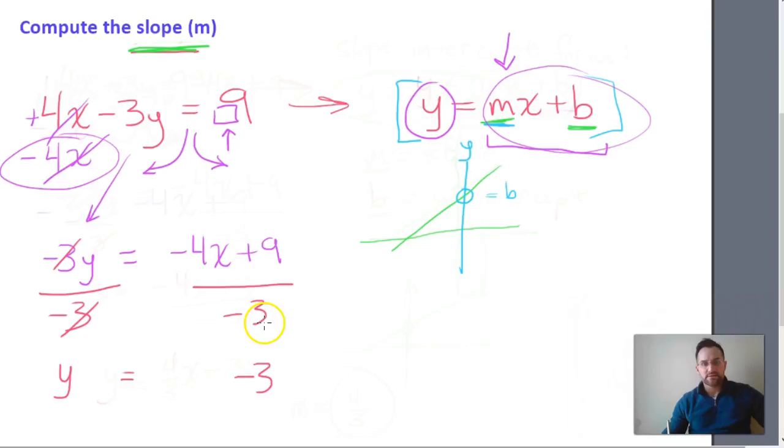Now, negative 4x divided by negative 3 is going to give us a positive 4 thirds.